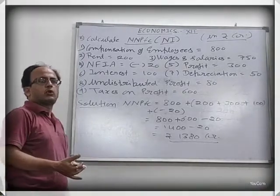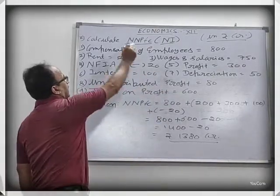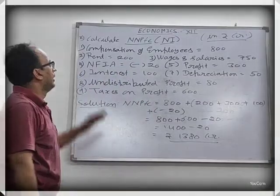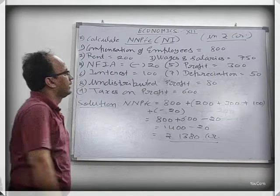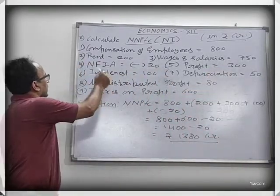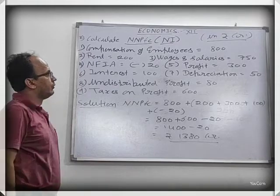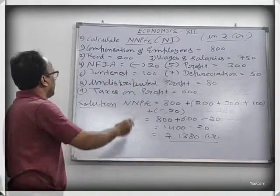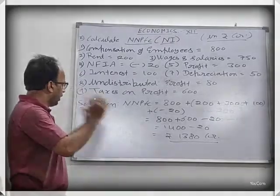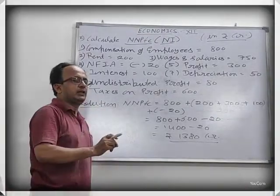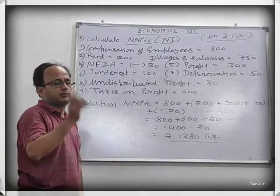Now we see the second question of the income method. We also find NDPFC or national income here. The different figures given are: Compensation of Employees 800, rent 200, wages and salary 750, NFIA minus 20, profit 300, interest 100, depreciation 50, undistributed profit 80, taxes on profit 600. We have to find national income. The formula is Compensation of Employees plus Operating Surplus plus Mixed Income plus NFIA.